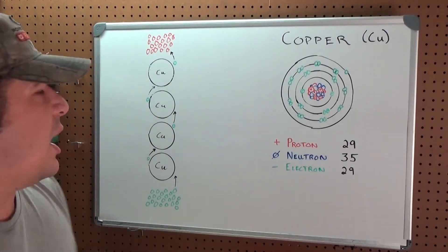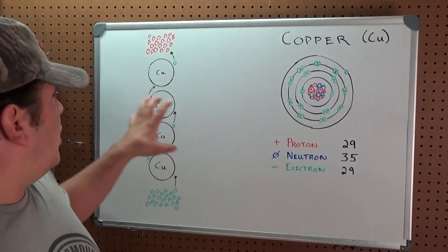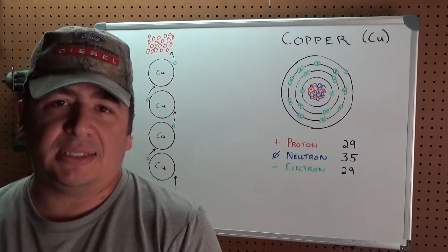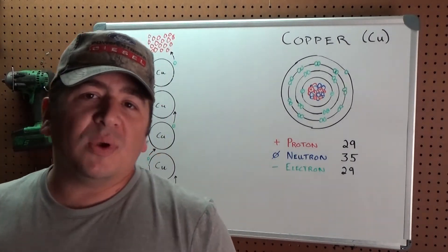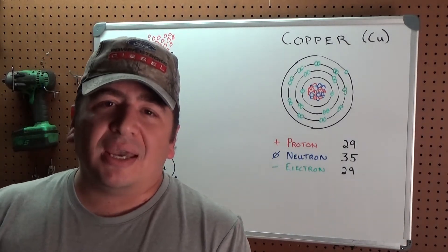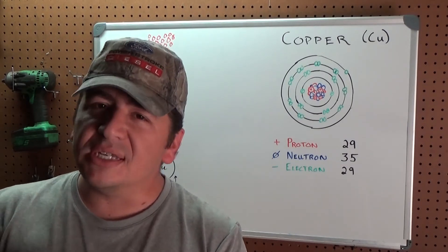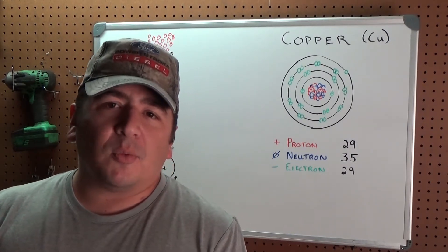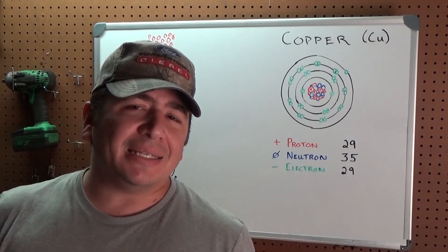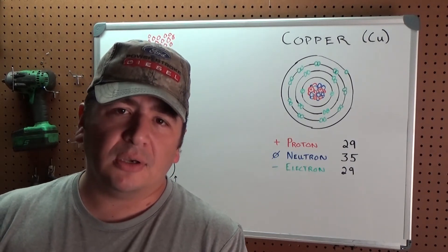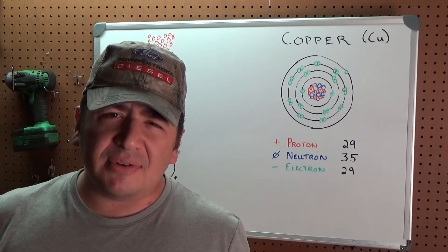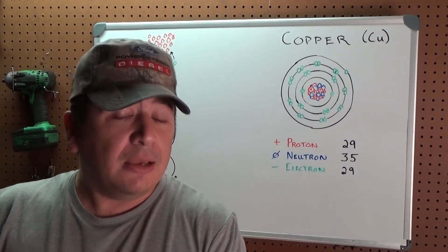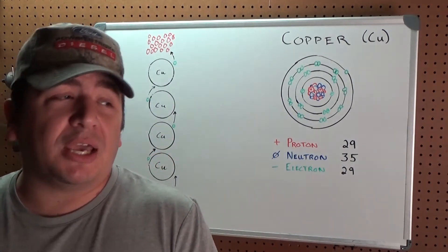This all happens very, very quickly — almost instantaneously. We say that electricity travels at the speed of light, or nearly the speed of light. In a copper wire it travels at about 96 percent the speed of light, which puts it at around 178,000 to 179,000 miles per second — still pretty quick.